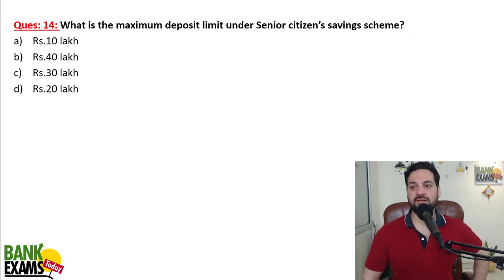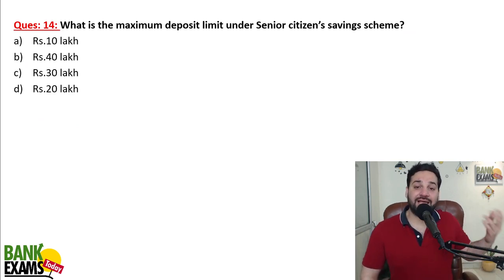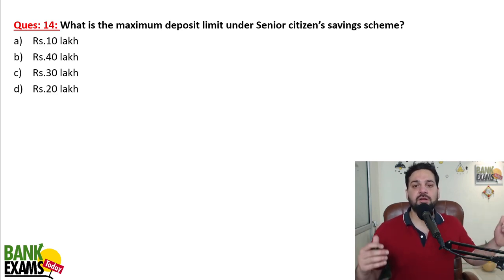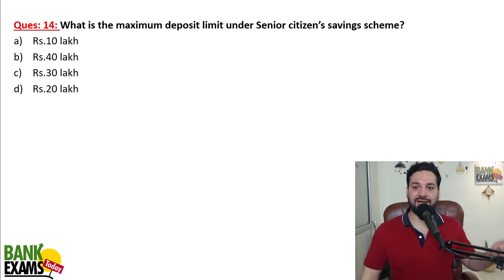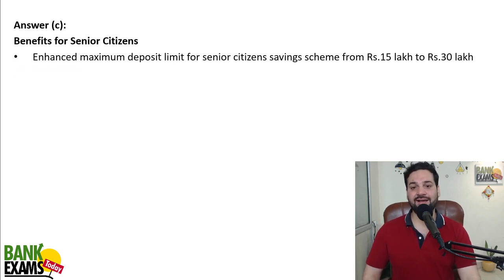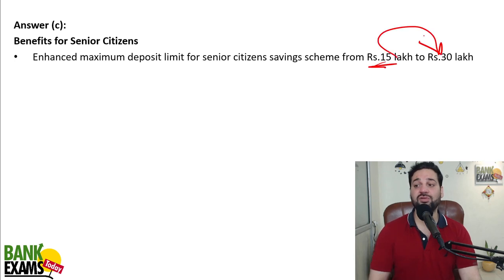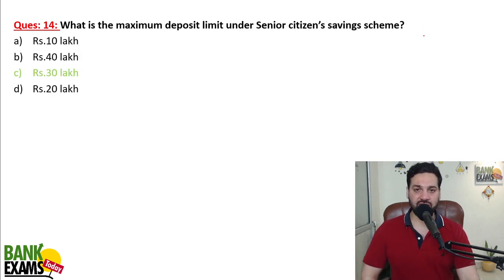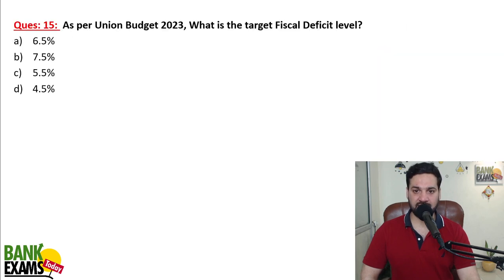The maximum deposit limit under the Senior Citizen Savings Scheme has been extended. When senior citizens retire, they get a lump sum of 10, 15, 20, or 25 lakh rupees. The tax-free limit for the Senior Citizen Savings Scheme has been increased to 30 lakhs — it used to be 15 lakhs but now it is 30 lakhs.